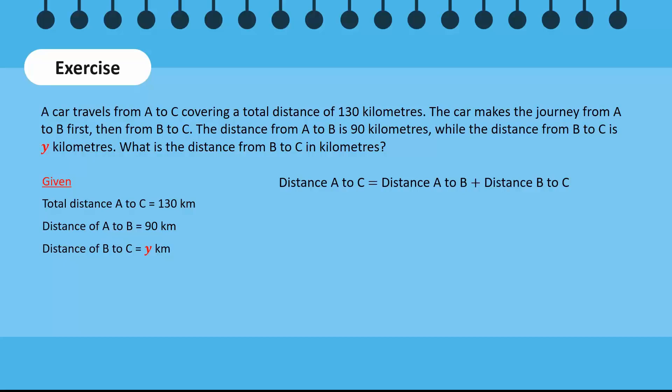Placing the values in the formula, 130 is equal to 90 plus y. Flipping the equation, we get y plus 90 is equal to 130, which means that y is equal to 130 minus 90. Hence, y is equal to 40, which means that the distance from B to C is equal to 40 km.